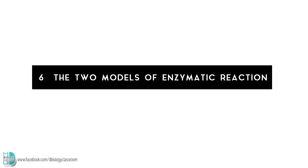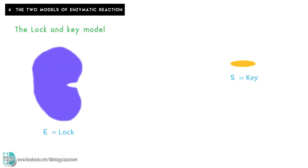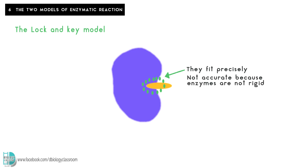Number 6, the mode of action of enzymes can be described in two models. The first is the lock and key model. The substrate is the key and the enzyme is the lock. The shape of the key fits precisely to the lock. This is not quite accurate because enzymes are not rigid.